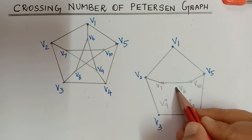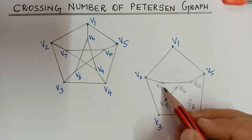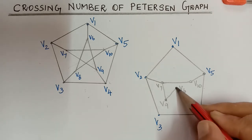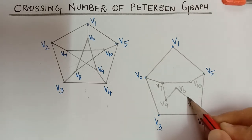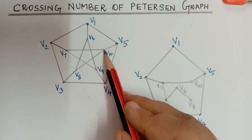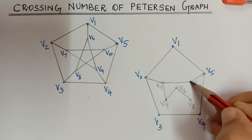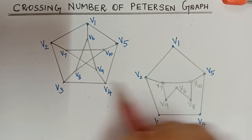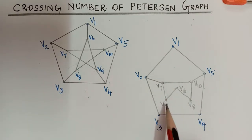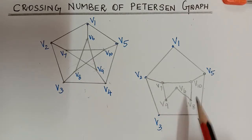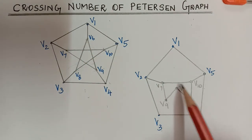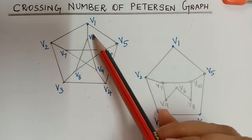By repositioning v6, v9, and v8, we can draw the edges v6-v9 and v7-v9 without crossing. Similarly, there is an edge between v6 and v8, and also between v10 and v8. Because we swapped the positions of v8 and v9 and moved v6, we have avoided those crossings.